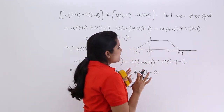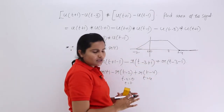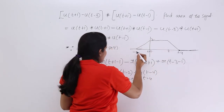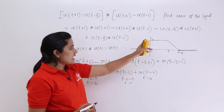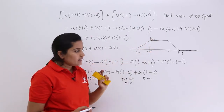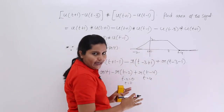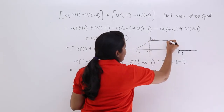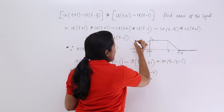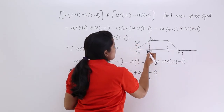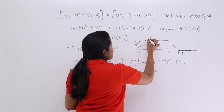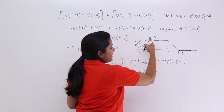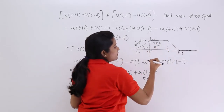After drawing the signal, we calculate the area by separating it into parts. The amplitude is 2 because the r(t+2) signal has amplitude 2 at the normalized line. The first part is a triangle from t=-2 to t=0, with length 2 and height 2, so area = half × 2 × 2 = 2. The second part is from t=0 to t=2 with height 2, forming a rectangle: 2 × 2 = 4. The area there is 4.